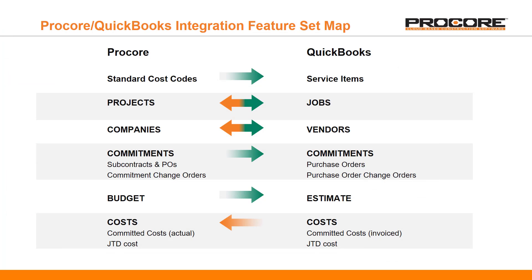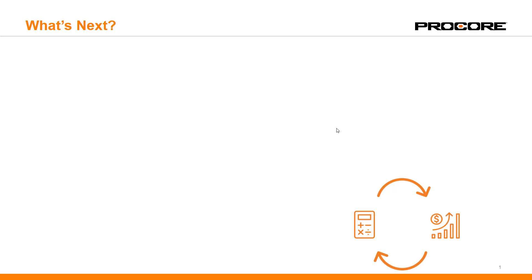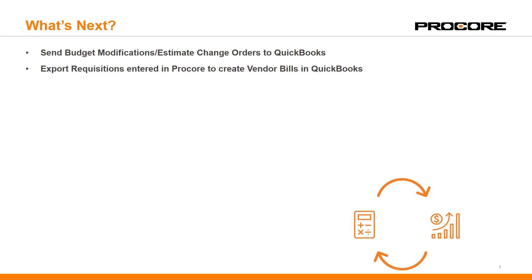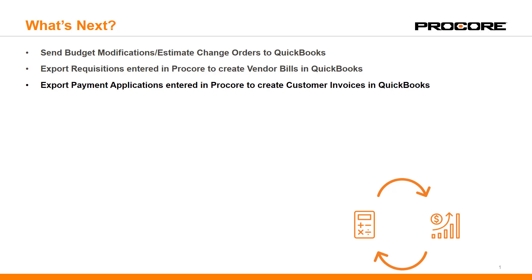So these are the features that are currently included with the Procore and QuickBooks integration, but we are not stopping yet. We have many new features on our product roadmap that we plan to add to this integration to make it even more robust. Some of the major features and enhancements we are hoping to add over the next year include: the ability to synchronize budget modifications and approved estimate change orders entered in Procore with the estimate in QuickBooks; the ability to export requisitions entered in Procore to create vendor bills in QuickBooks; the ability to export payment applications entered in Procore to create customer invoices in QuickBooks; and an enhancement that will allow you to export employee time entries entered in Procore to QuickBooks, which will reduce manual entry required of your payroll staff, eliminating data entry errors, and speeding up the process of issuing employee paychecks.